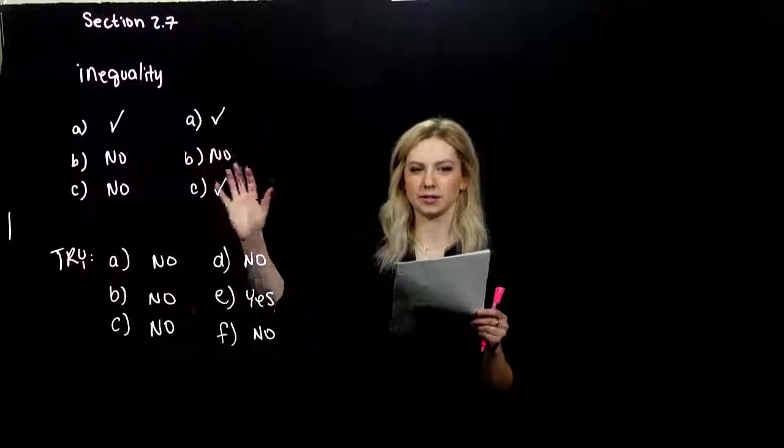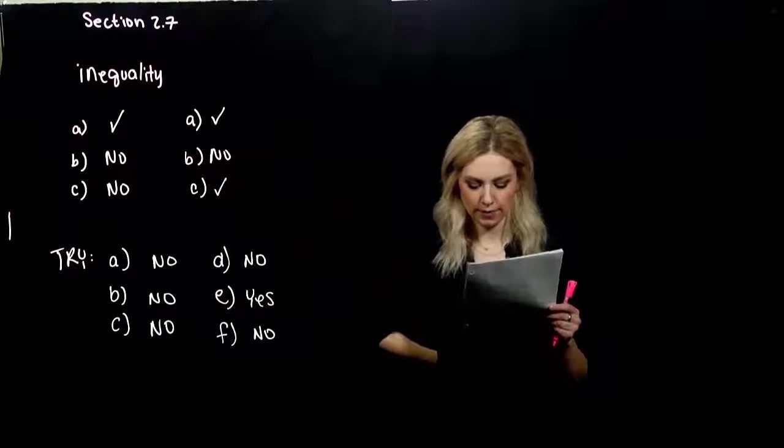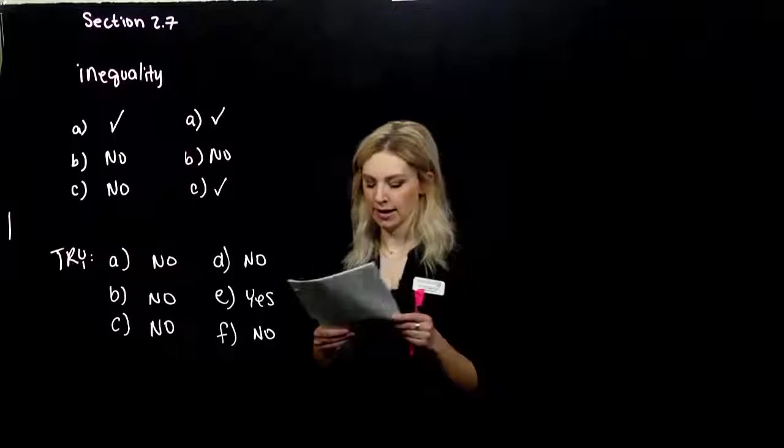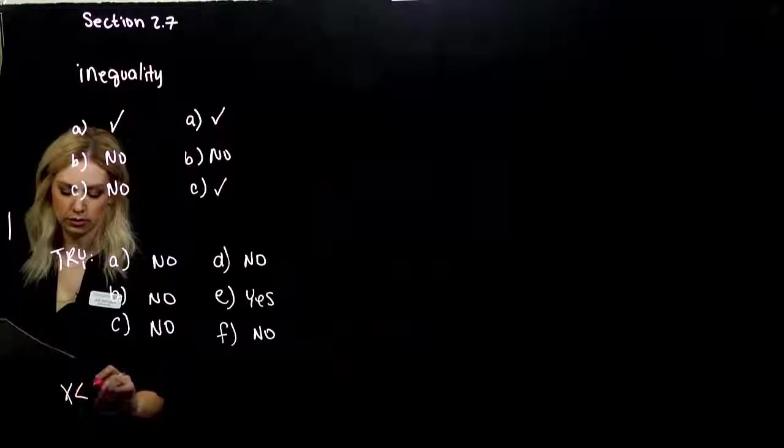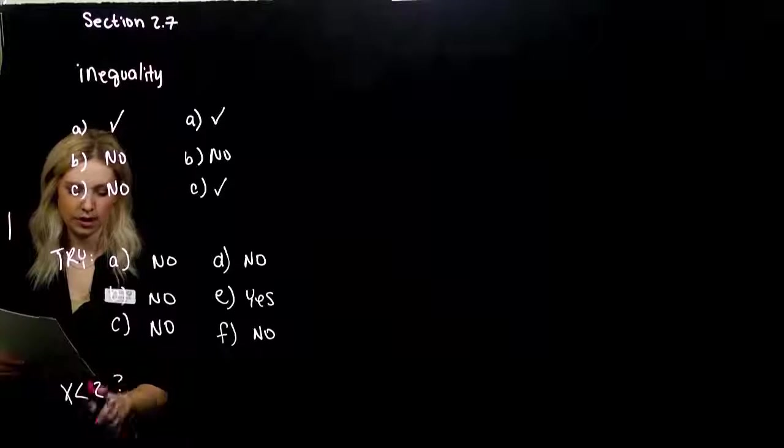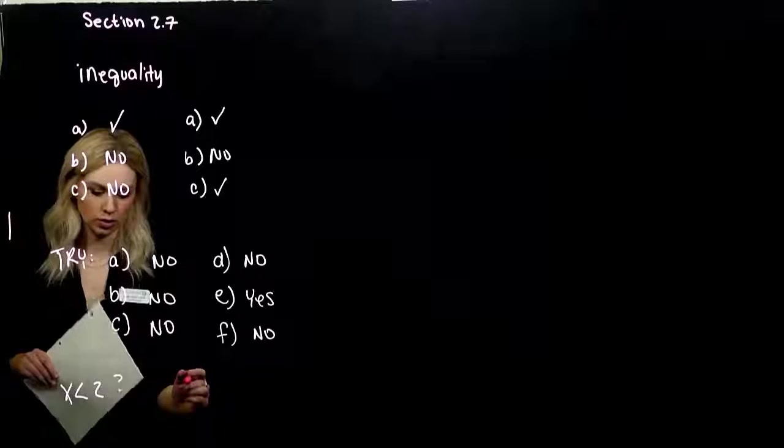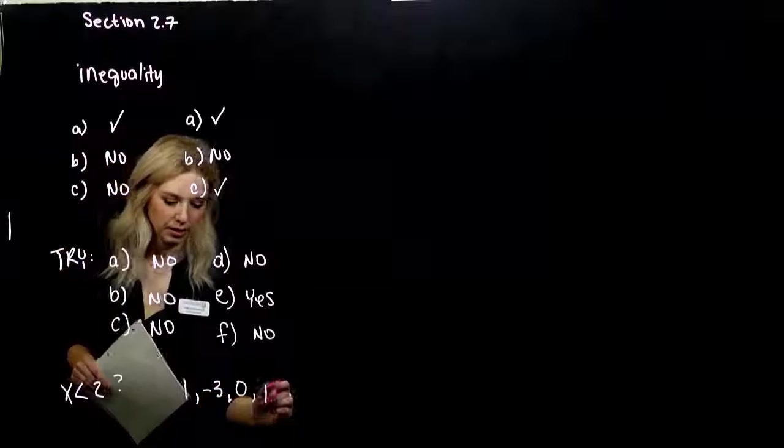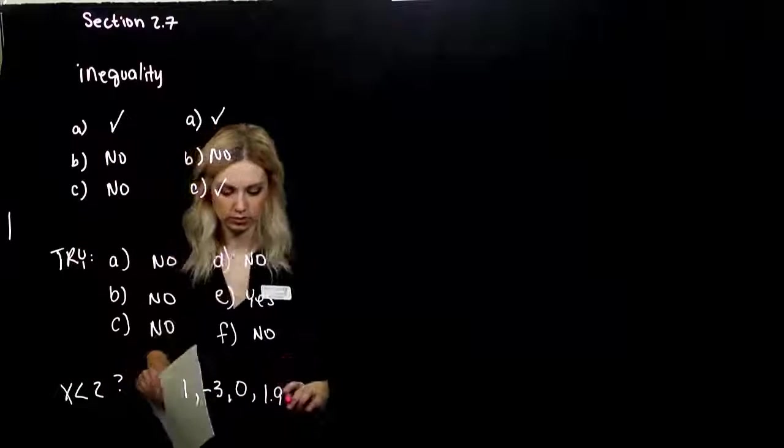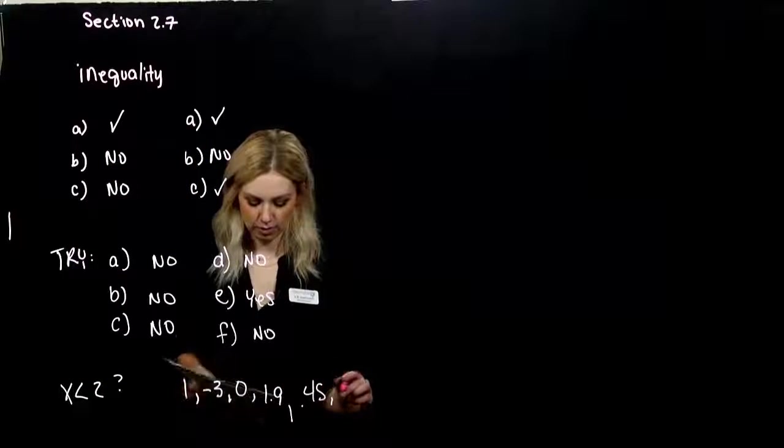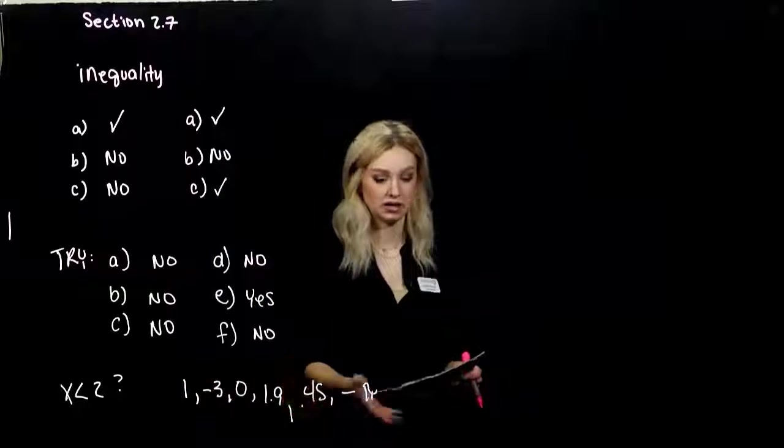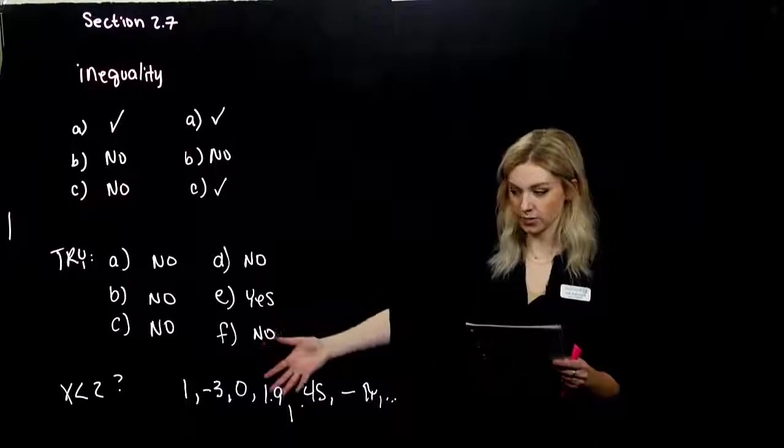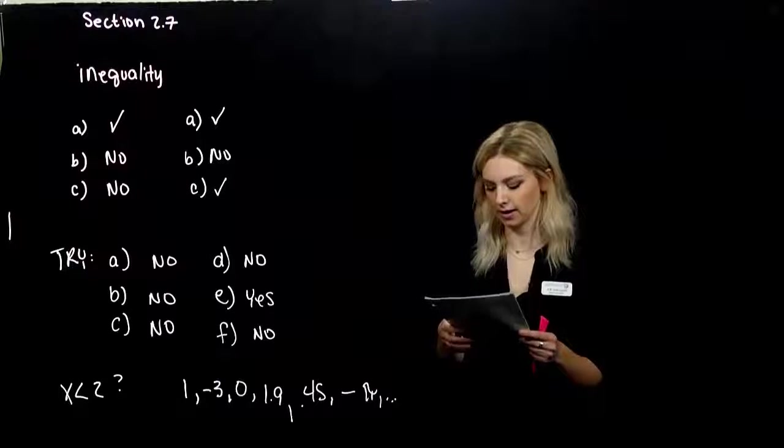As we're looking at graphing some of these solutions to an inequality, we first have to talk about, how many solutions do we have? What are some of the solutions for x less than 2? I couldn't choose 2, but I could choose 1, negative 3, 0, 1.9. I could pick 0.45, I could pick minus pi. I have a lot of different options, and this list continues on. How many solutions do I have to an inequality? I have infinitely many that can satisfy this thing.